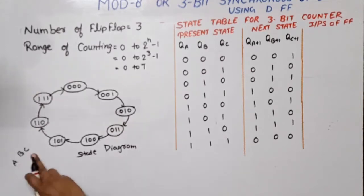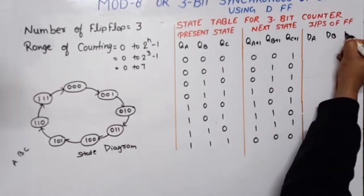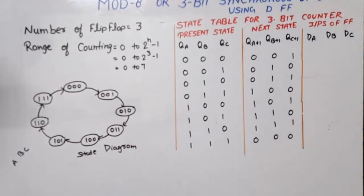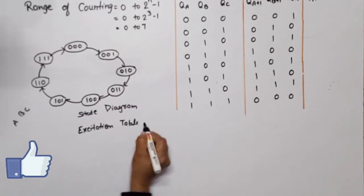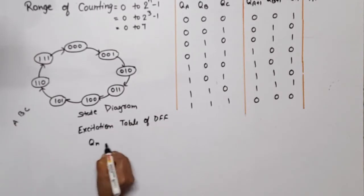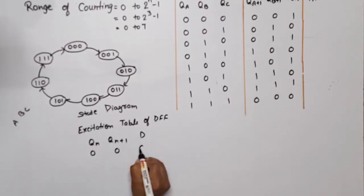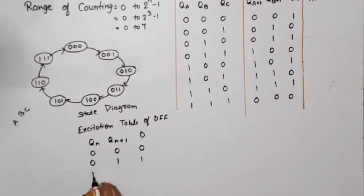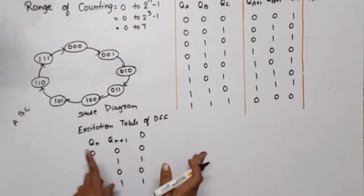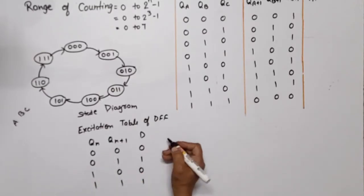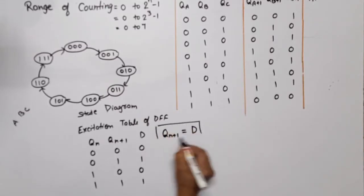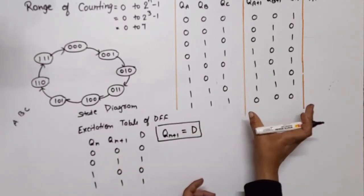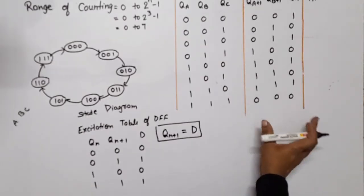Now we need the input of each flip-flop. For 3 bits A, B, C — three flip-flops — we need inputs DA, DB, and DC. To write their values we use the excitation table of the D flip-flop: if present state Qn = 0 and next state Qn+1 = 0, then D = 0; if 0→1 then D = 1; if 1→0 then D = 0; if 1→1 then D = 1. So for a D flip-flop, Qn+1 equals D — the next state value is the D input. Therefore we simply copy the next state column as the D input.